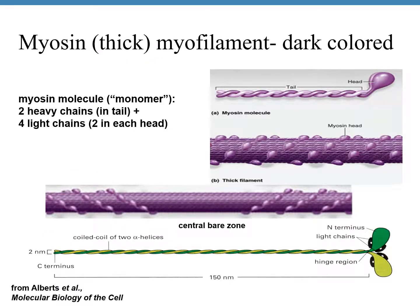The thick myofilament is made up of myosin protein, which looks like a golf club — it has a tail and a head. The tail is made up of two heavy protein chains and the head is made up of four light chains. The junction between the head and tail, the neck region, acts like a hinge joint that allows the head to move up and down.